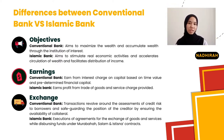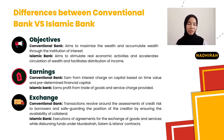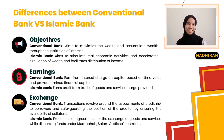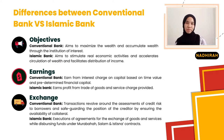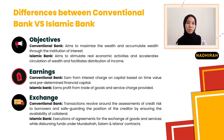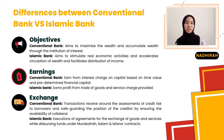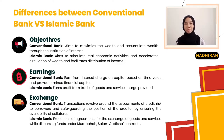The second difference is in terms of earning: conventional banks earn from interest charged on capital based on time value and predetermined financial capital, while Islamic banks earn profit from trades of goods and service charges provided. The third difference is in terms of exchange: for conventional banks, banking transactions revolve around the assessment of credit risk to creditworthy borrowers and safeguarding creditors by ensuring the availability of collateral.